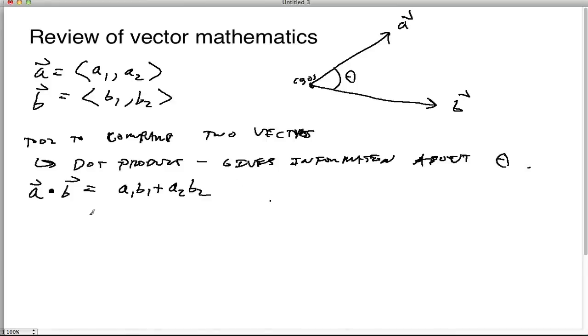And in general, if you want to talk about higher dimensions, it would be sum from i equals 1 to N of Ai times Bi, the sum over all of the dimensions.